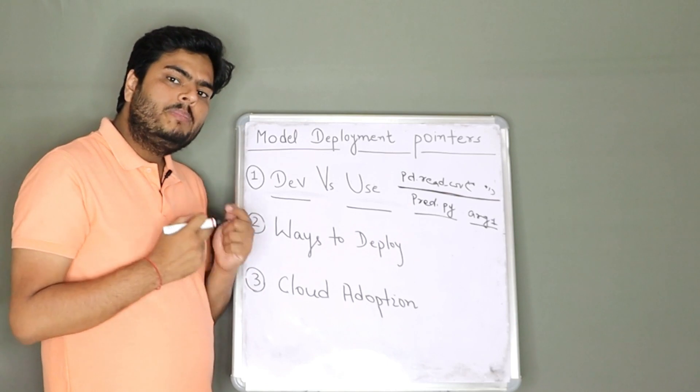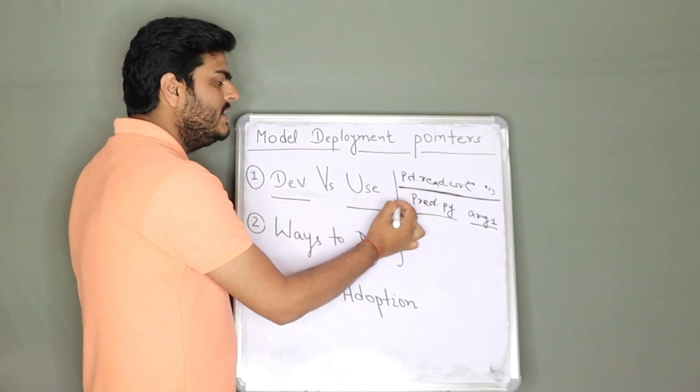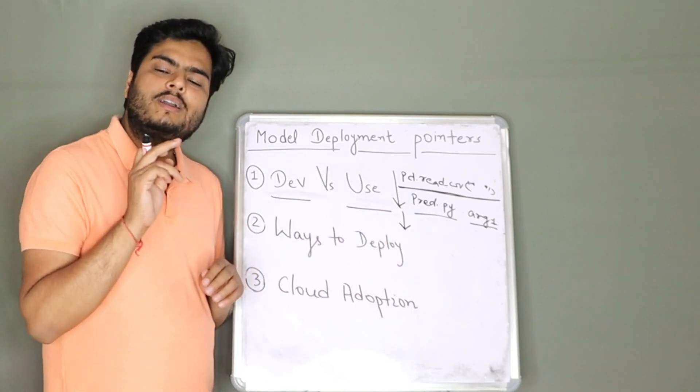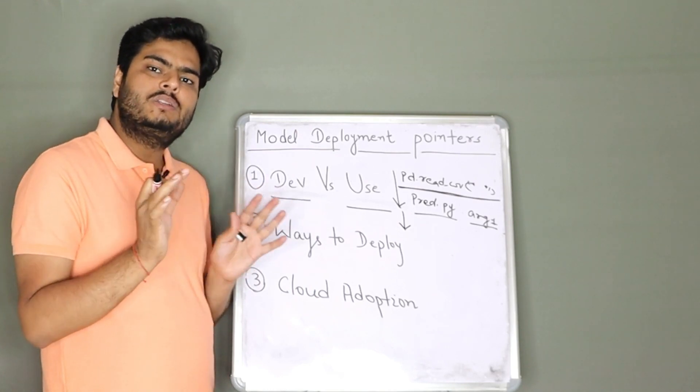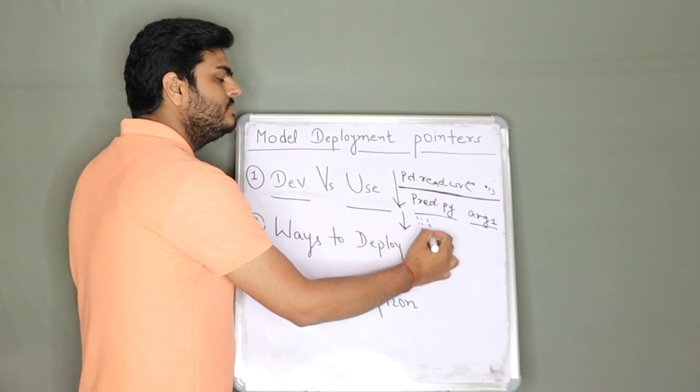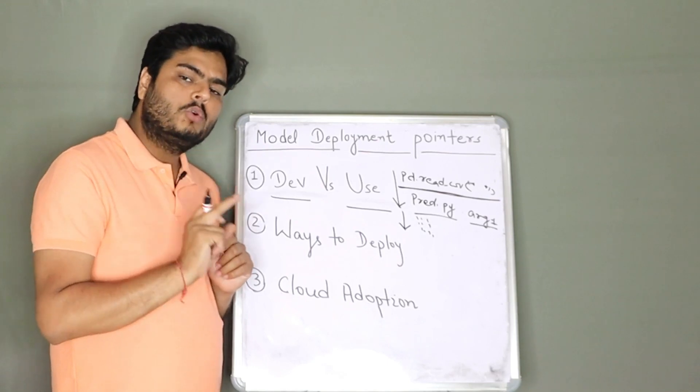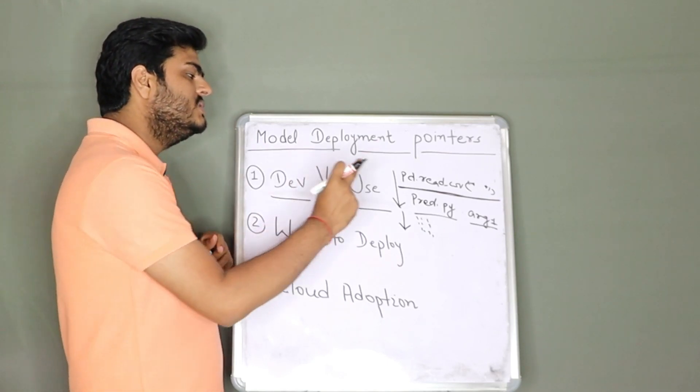Second thing is while developing the model, you might be, this is an example of data read. After that, what you do? You do data cleaning, missing value imputation, outlier treatment, all those data cleaning stuff. So let us say you write some lines of code here. Now, same lines of code or same logic you want to use for your prediction script.